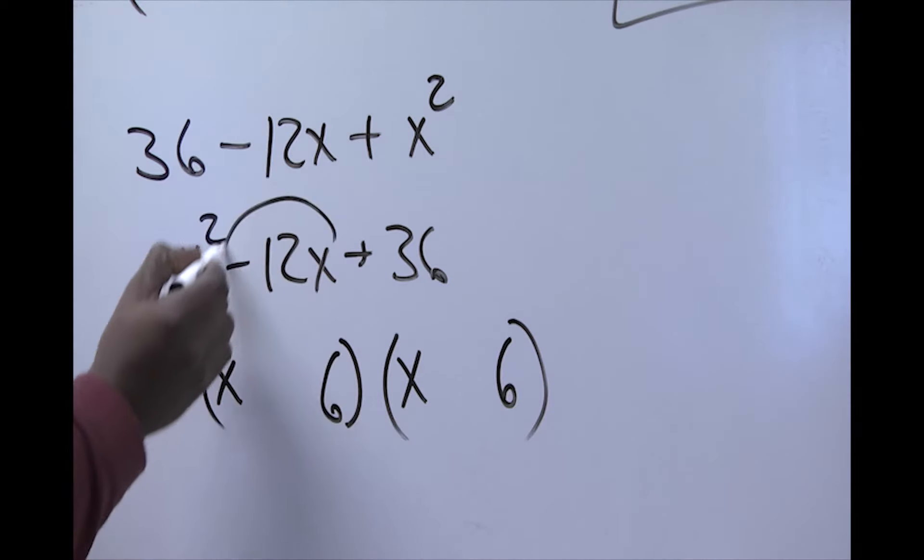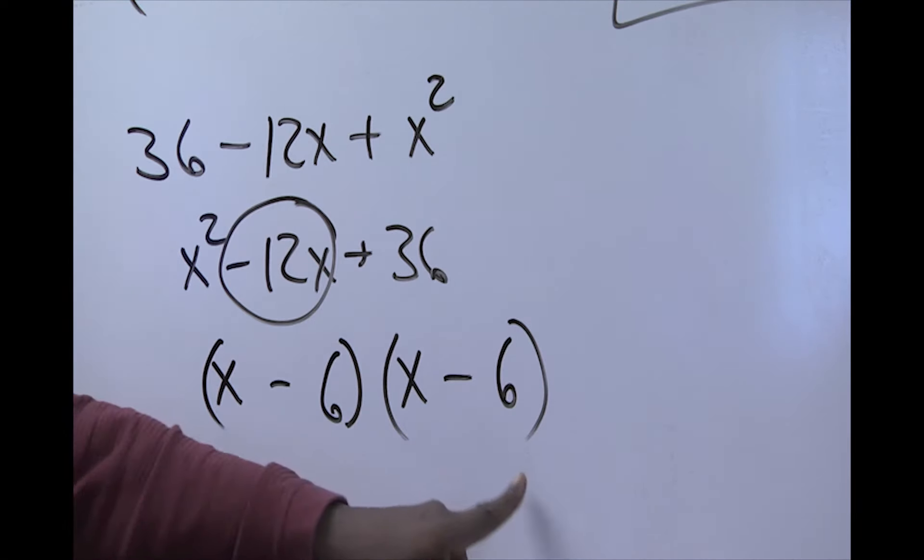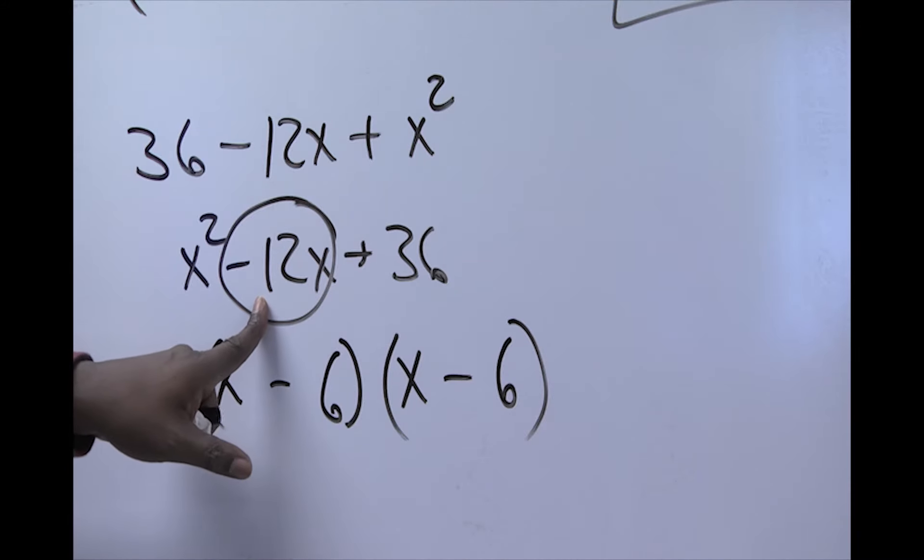Now, the middle term is negative. So, we must get that. So, in order for that to be negative, both of these have to be negative. Keep in mind, a negative 6 and a negative 6 will give us a negative 12.